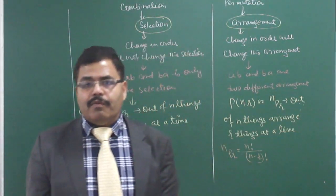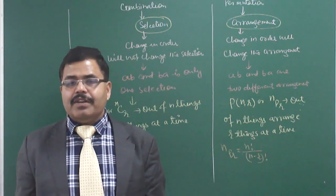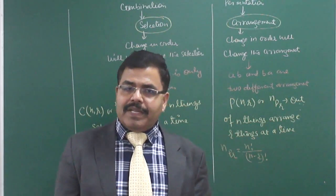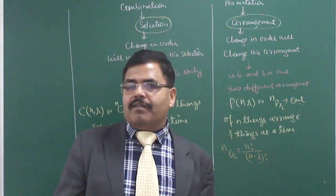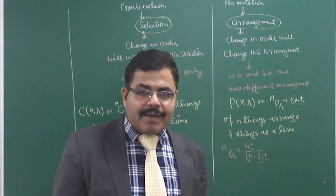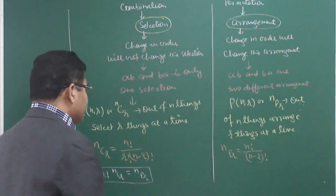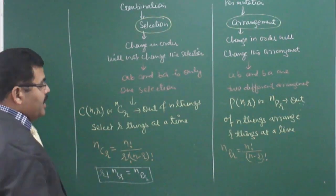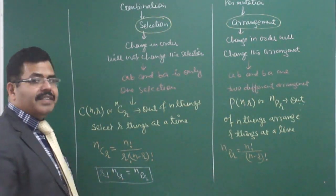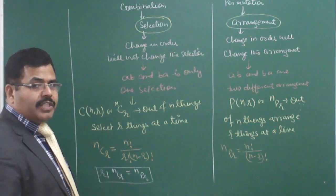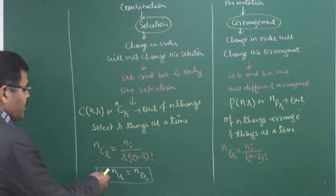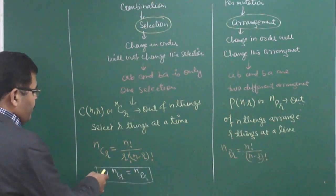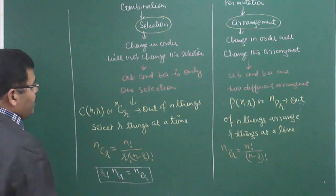But whenever it is not clear in the beginning whether the question belongs to permutation or combination, then depending upon the requirement, you can first apply the formula for combination, and thereafter if a change in order changes the selection, we need to multiply by R factorial as well.